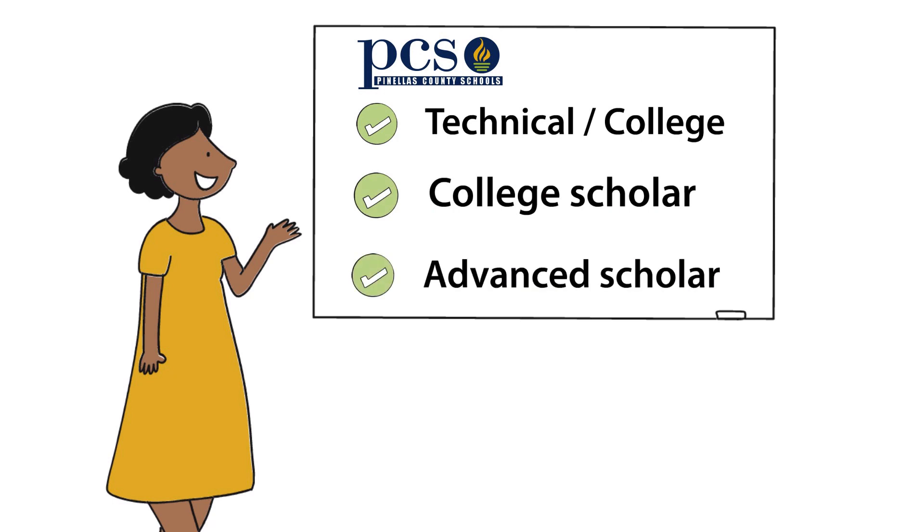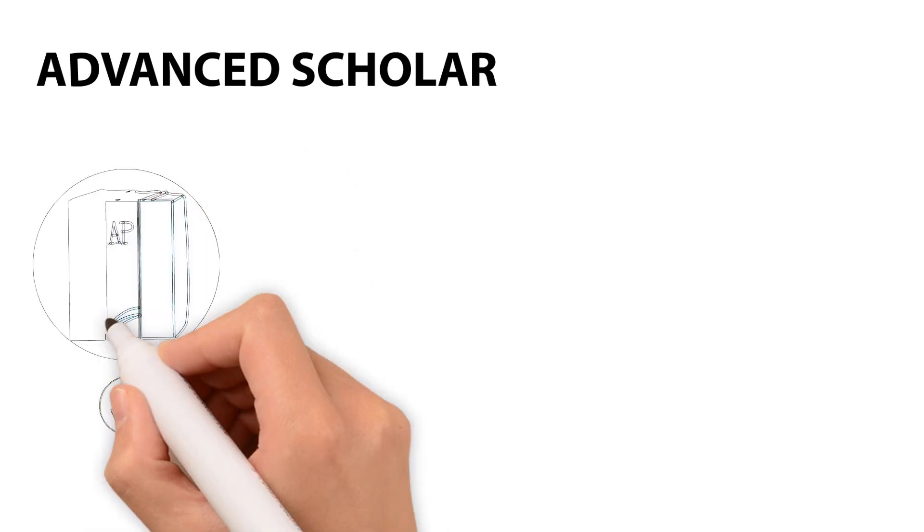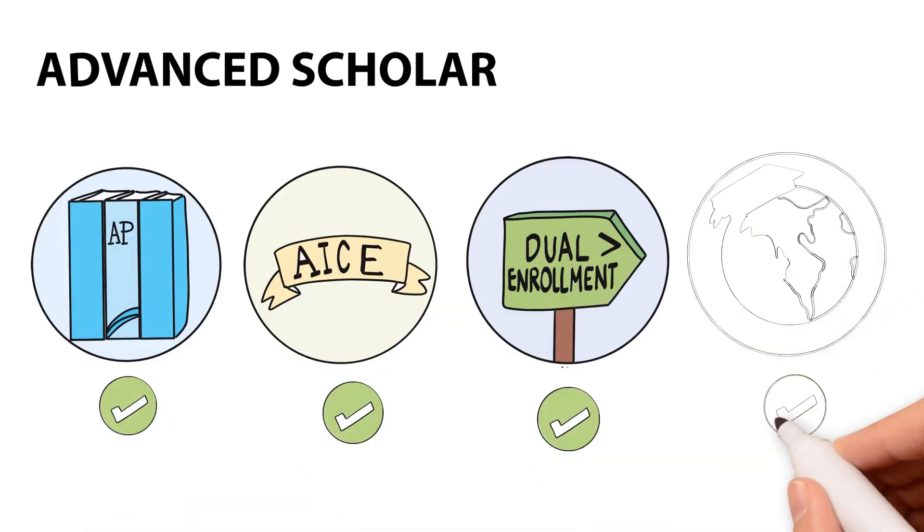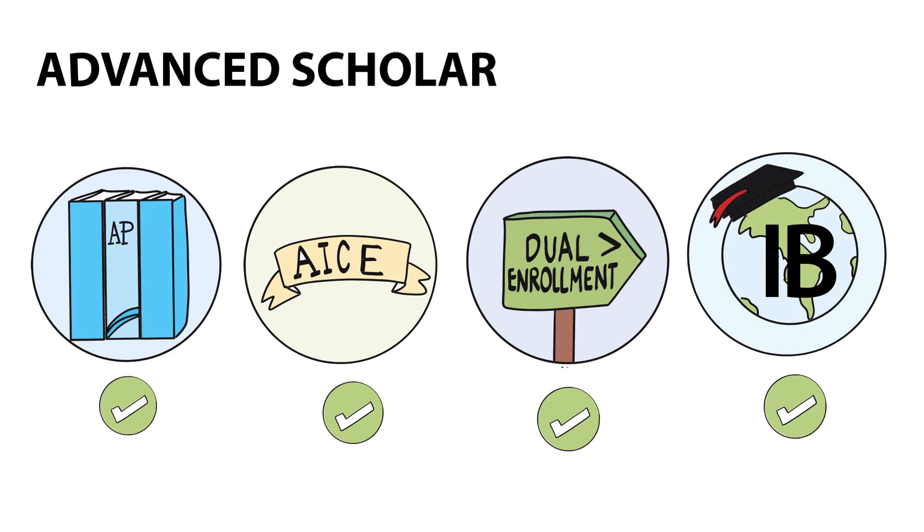Let's take a closer look at each pathway. The Advanced Scholar Pathway focuses on college-level courses through Advanced Placement Classes, Cambridge AICE, Dual Enrollment, or International Baccalaureate.